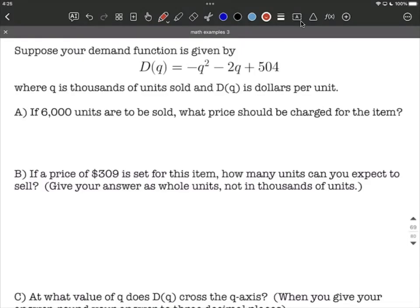On this example, we're given a demand function. D of q equals this negative quadratic function, negative q squared minus 2q plus 504. And this is important, we want to identify what our variables mean and what our function means.